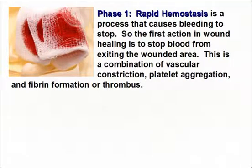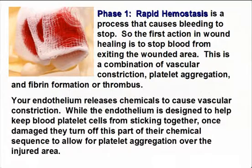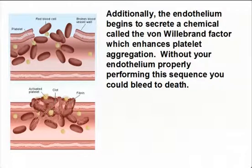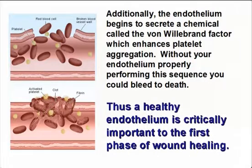Phase one, rapid hemostasis, is a process that causes bleeding to stop. The first action in wound healing is to stop blood from exiting the wounded area. This is a combination of vascular constriction, platelet aggregation, and fibrin formation or thrombus. Your endothelium releases chemicals to cause vascular constriction. While the endothelium is designed to help keep blood platelet cells from sticking together, once damaged, they turn off this part of their chemical sequence to allow for platelet aggregation over the injured area. Additionally, the endothelium begins to secrete a chemical called von Willebrand factor, which enhances platelet aggregation. Without your endothelium properly performing this sequence, you could bleed to death. Thus, a healthy endothelium is critically important to the first phase of wound healing.